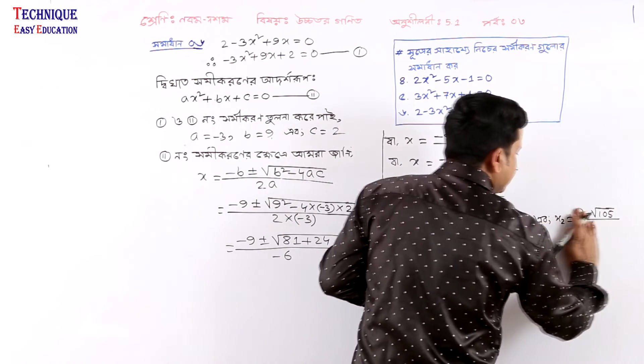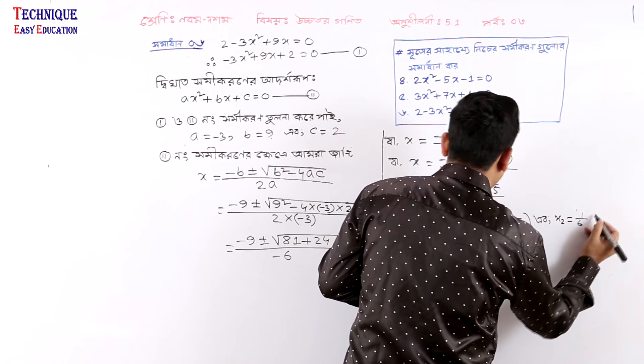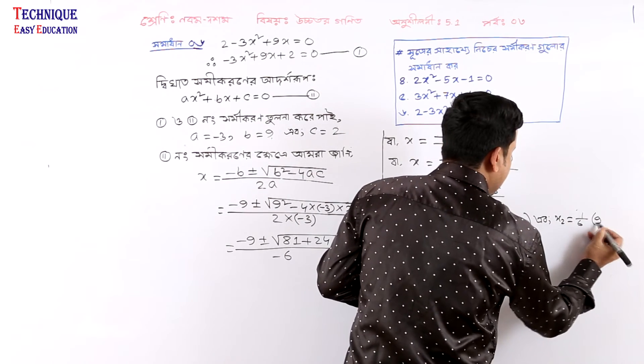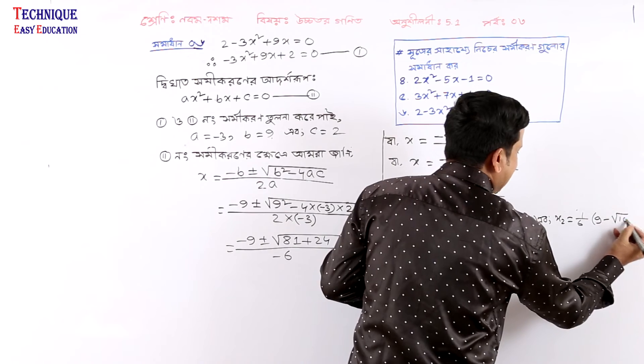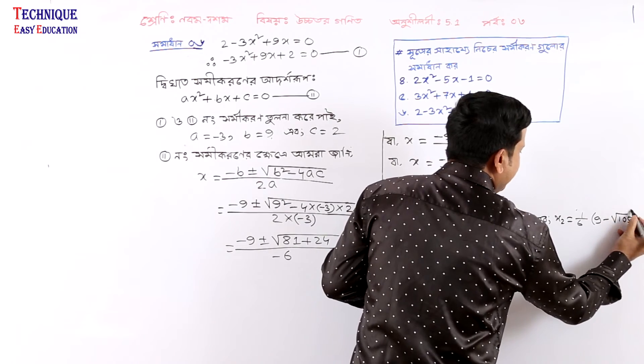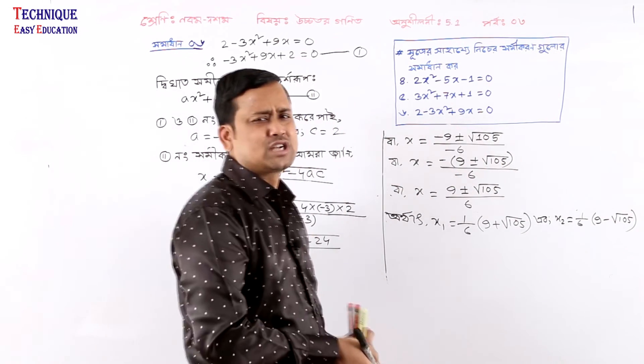So 9 minus root x plus 6. We have to keep this same line. The answer is 6 equals 6, so we have the two solutions.